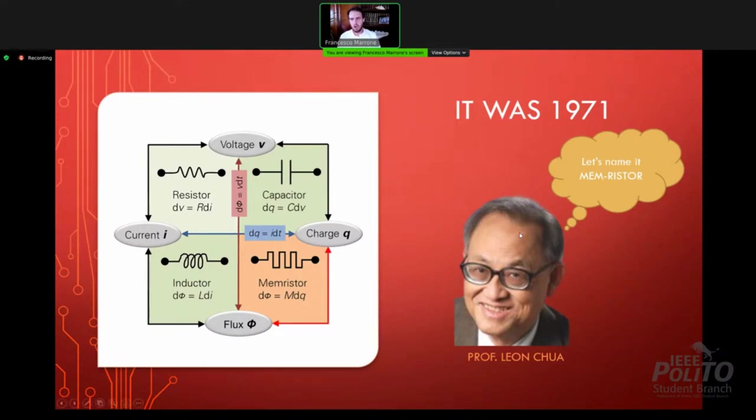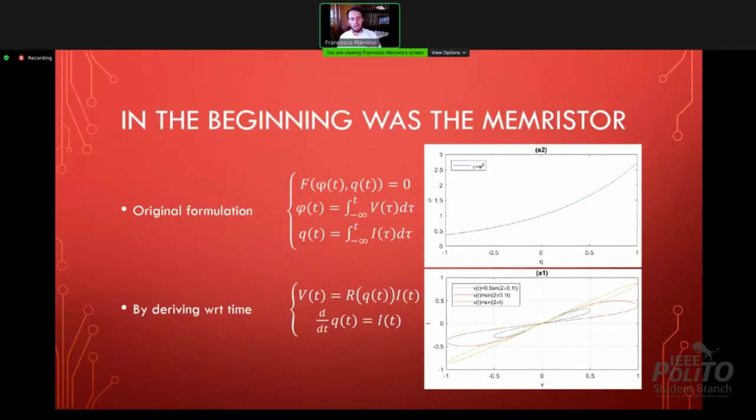Memristor is the contraction of memory resistor. It's a resistor that shows a memory property, and now we're going to explain exactly why. The original formulation, which is reported on this slide, shows that Chua in 1971 with his original paper introduced the memristor. That introduction, that formalization, was an algebraic connection, an algebraic relation closed or open, analytical or non-analytical, between the history of the voltage and the history of the current at the port.